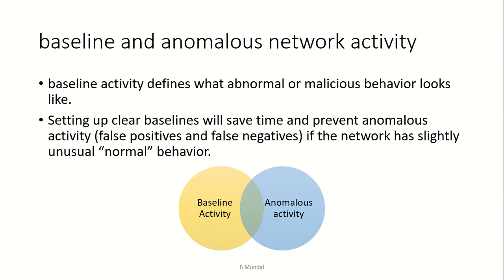This leads to false positives and false negatives. If the network has slightly unusual normal behavior, baseline activities and anomalous activities can overlap, and those overlapping sections create classification challenges.